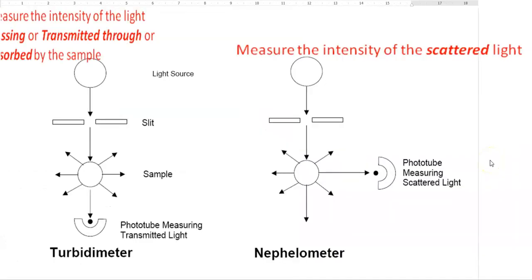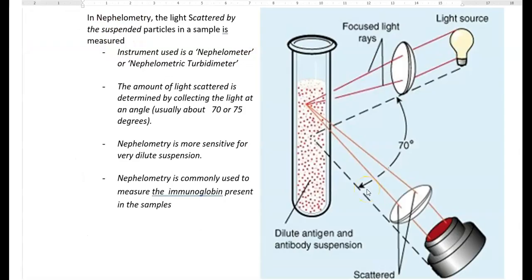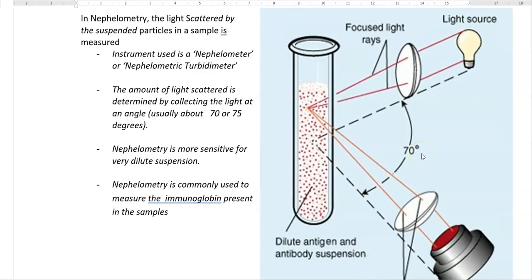Next, we look at points related to nephilometry. It measures the intensity of scattered light. In nephilometry, the light scattered by suspended particles in a sample is measured. The instrument used for this purpose is a nephelometer or nephelometric turbidimeter. The line diagram of that instrument is shown on the right hand side, where you can see the amount of light scattered by suspended particles is collected at an angle of 70 to 75 degrees. Nephilometry is more sensitive when using dilute suspension for measurement. Nephilometry is commonly used to measure immunoglobulin levels present in samples.